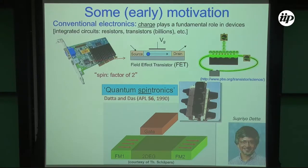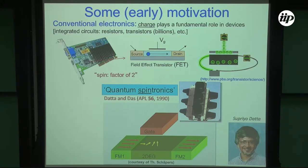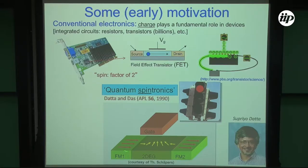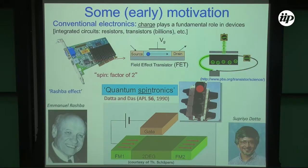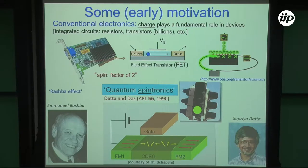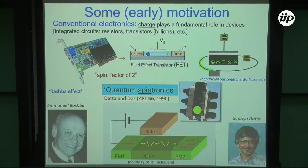Back in the 90s, Datta and Das proposed the so-called spin field effect transistor, which is a variant in which the drain and source are ferromagnetic materials. In principle, you can inject spin-polarized current, and with the gate, you can control the spin of the electron. The electron does some kind of rotation along the way. Because the two source and drains have the same polarization, it cannot go through. But due to the Rashba effect — which is essentially spin-orbit interaction — you can gate the system and change the strength of the spin-orbit interaction. You can imagine the electron doing a somersault and ending up on the other side with the right polarization.